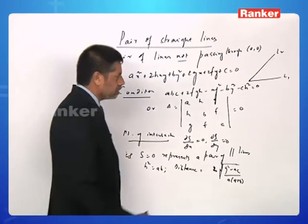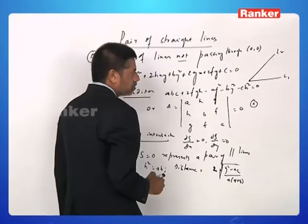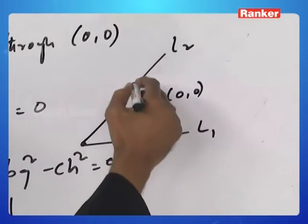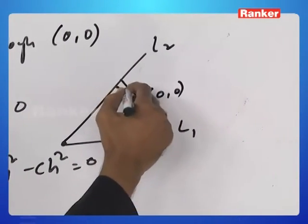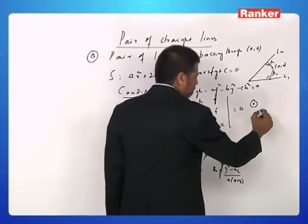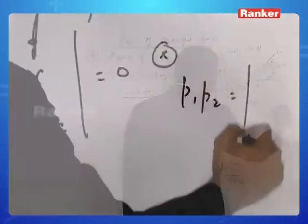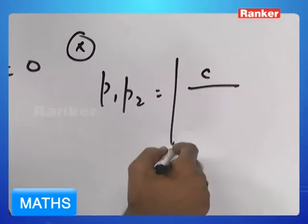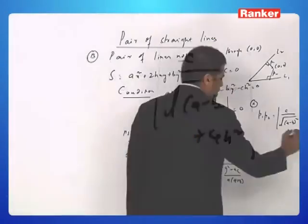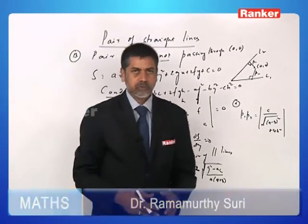And then we can have one more point. Suppose we have origin there and you draw perpendiculars. Let us call the perpendiculars as p1 and p2. Then the product of perpendiculars is given by mod c by root of a minus b whole squared plus 4h squared. Like this we can have some basic information about which many problems can be solved.